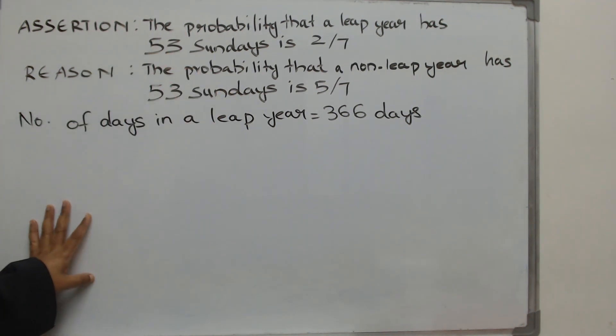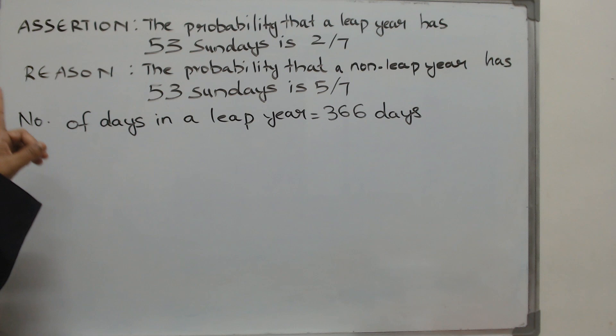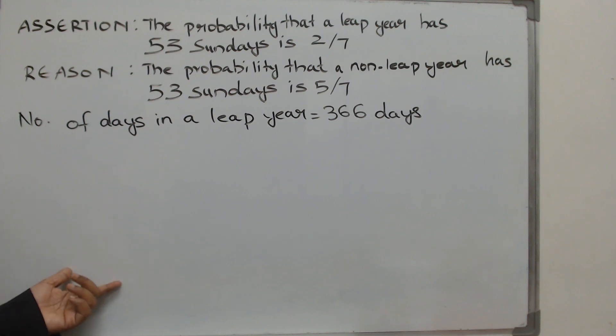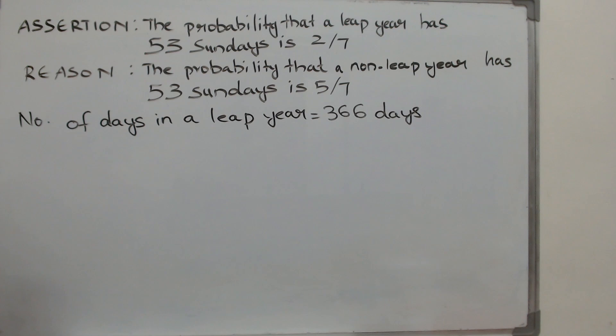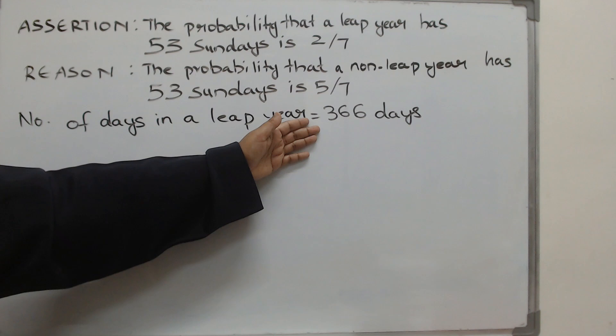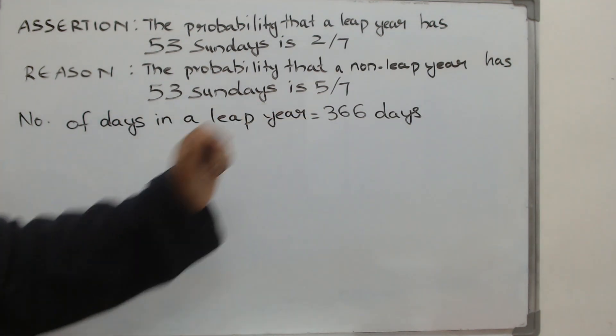For that all you have to find is the number of weeks, because in a week you will have exactly one Sunday. Not just Sunday, it is the same for Monday, Tuesday, whatever day. If you take one week you will have exactly one Sunday. So how many weeks are there? How will you find out? In a week there are 7 days, so divide it.